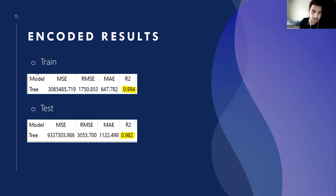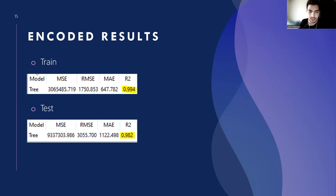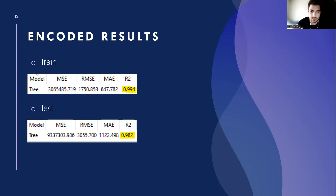When we look at the results on train and test, although our R-squared values are good, we have very large errors. The reason for the high MAE values is that Indian rupees were used for prices in our data.